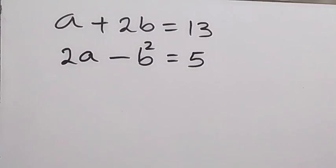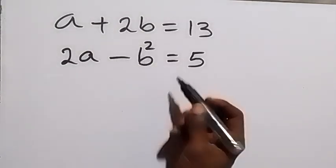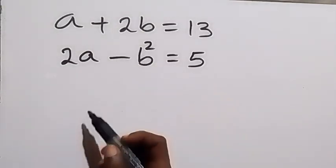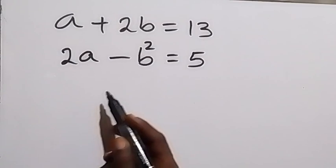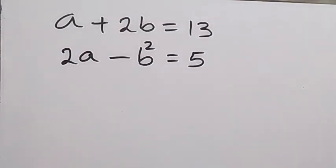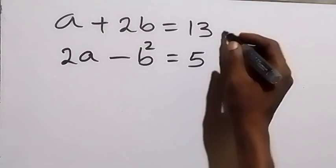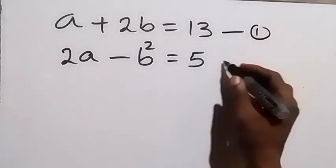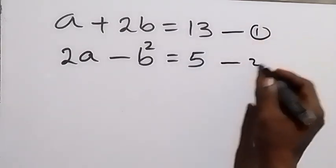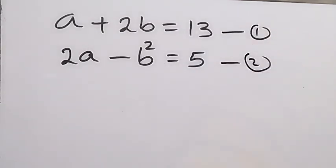Hello, you are welcome. How to solve this nice olympiad problem: a plus 2b equals 13, and 2a minus b squared equals 5. Let's label this as equation 1 and this as equation 2.